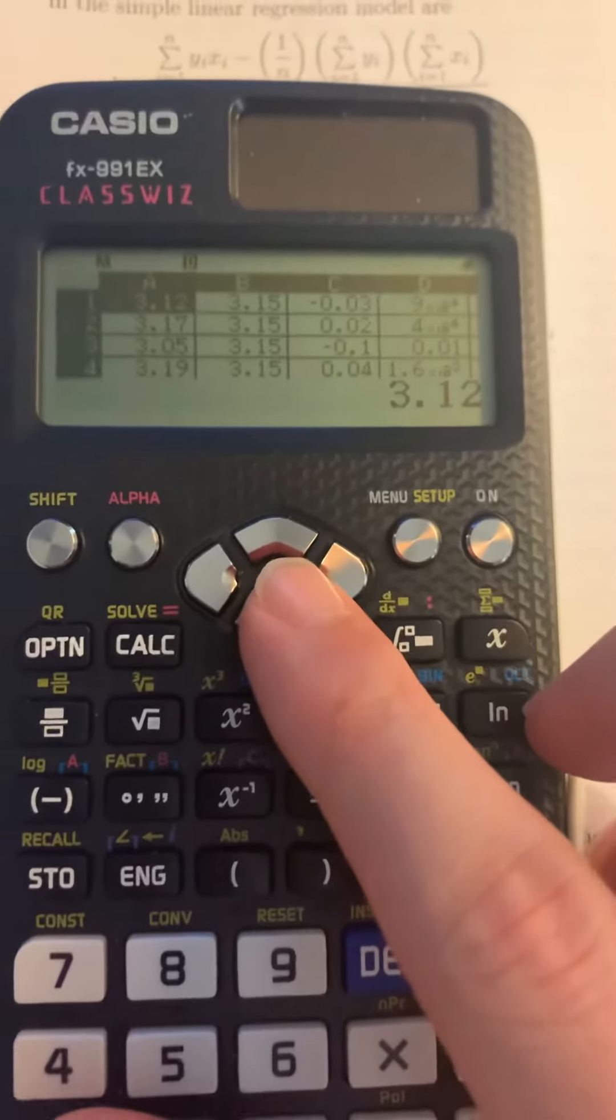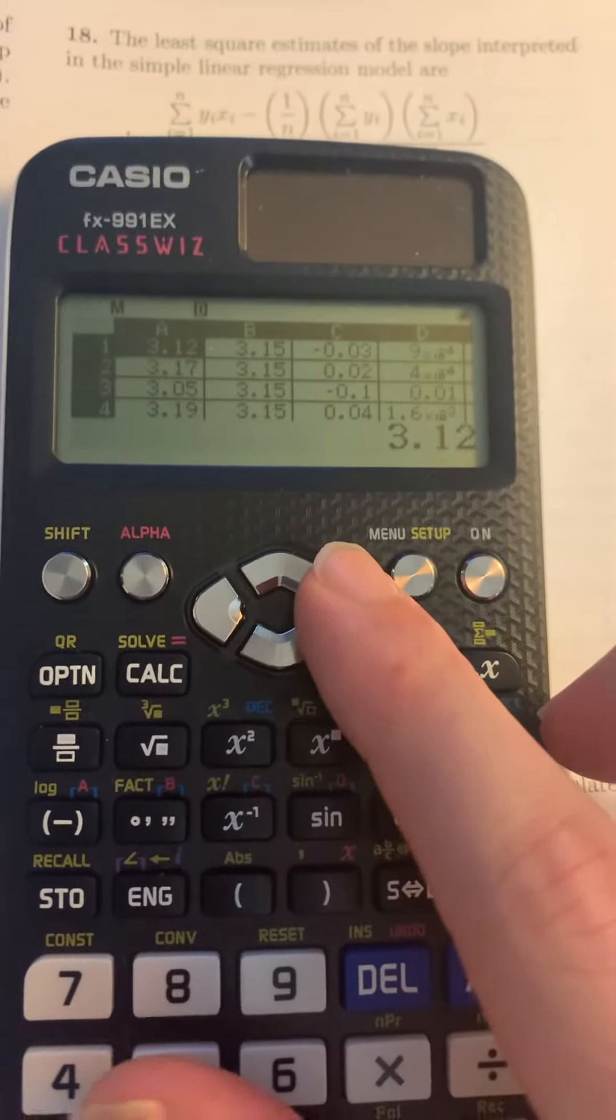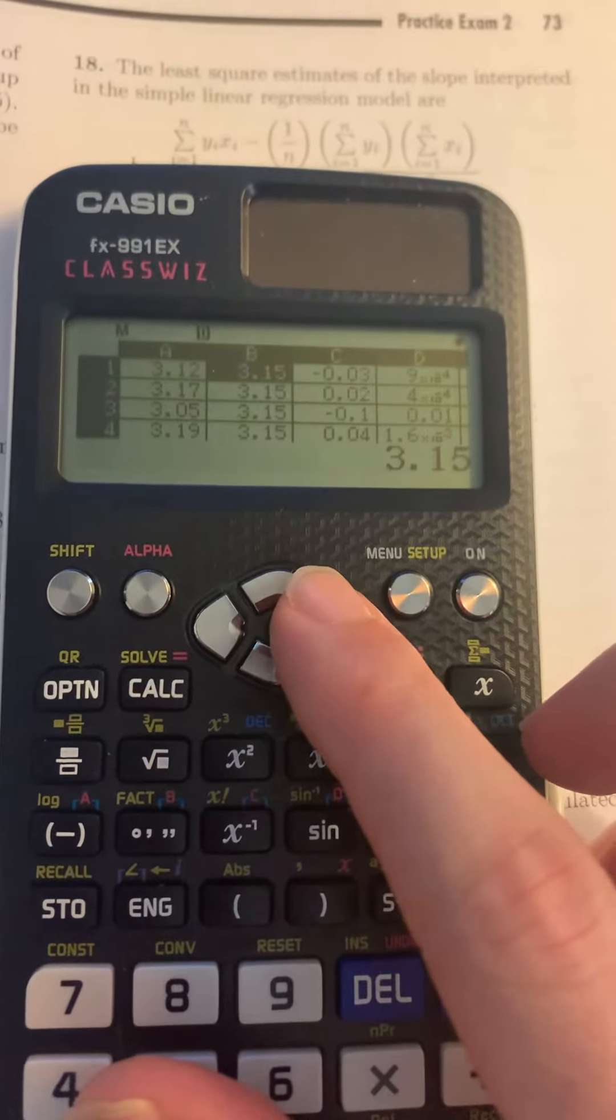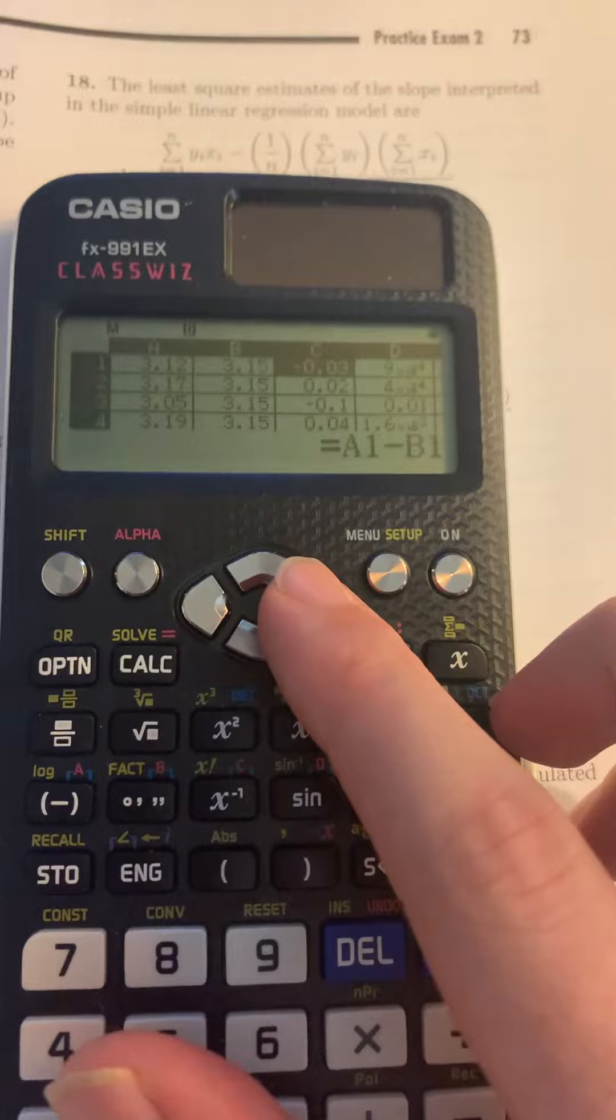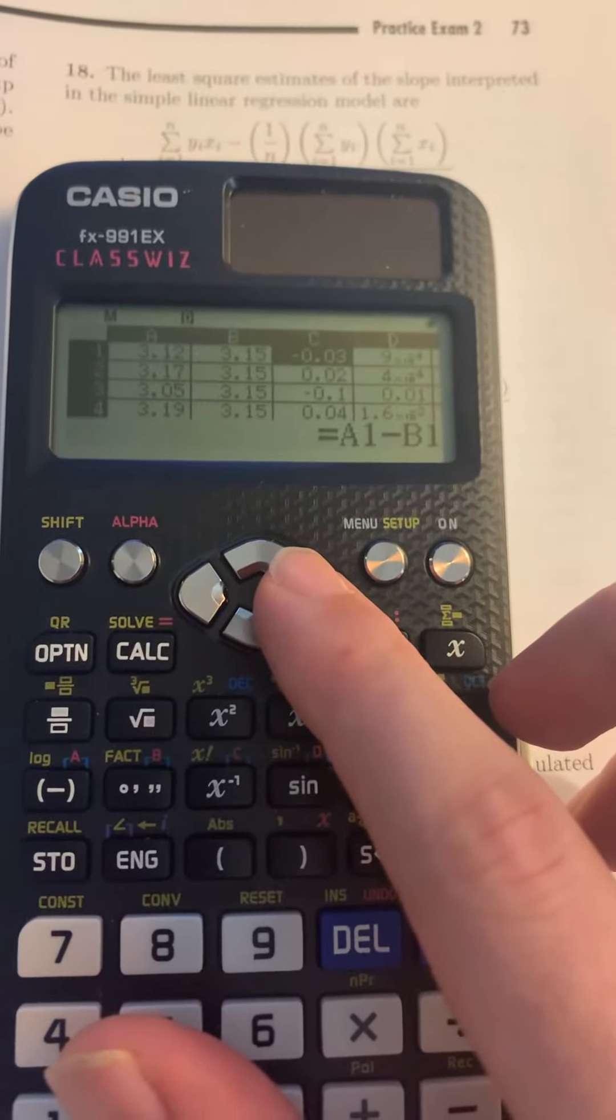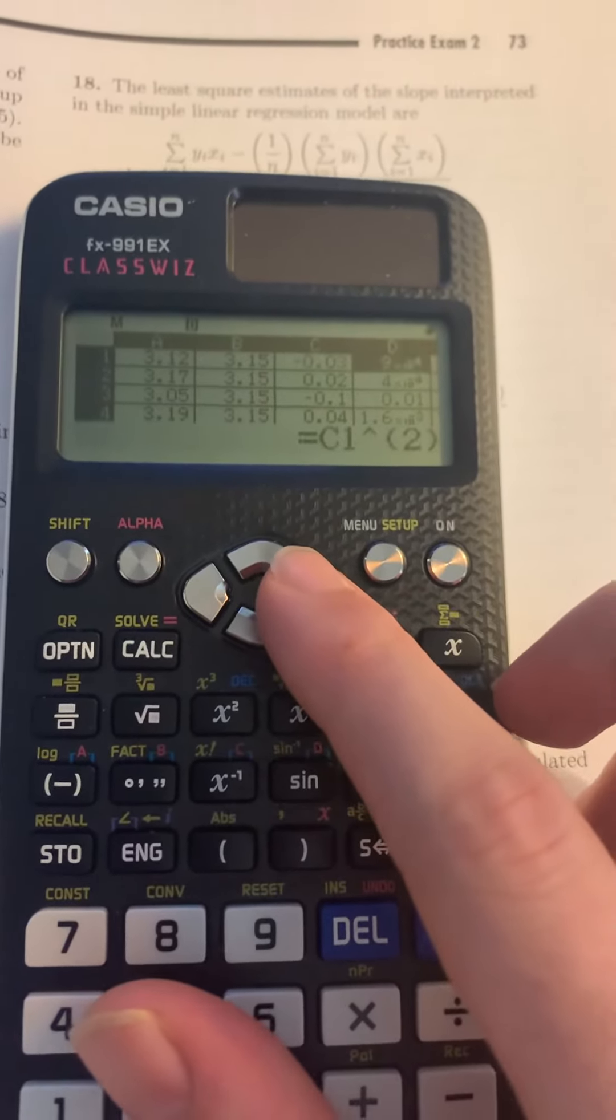Okay, so I take the data set, which is A1 through 13, and then I take the average of that and copy and paste it through B1 through 13. And I take the difference between XI and the mean, and then I square it.